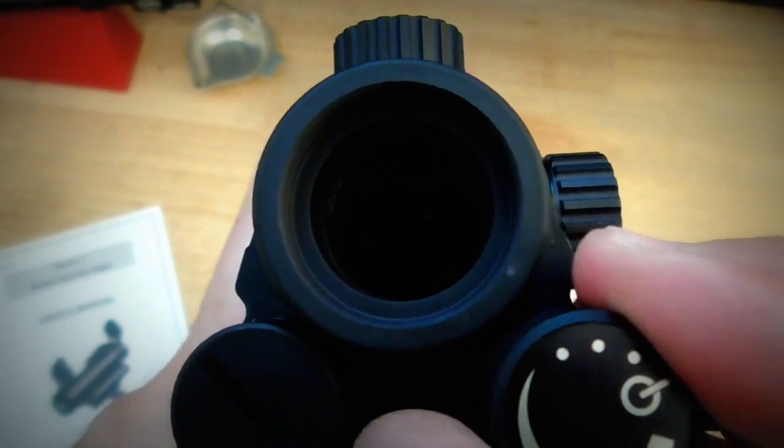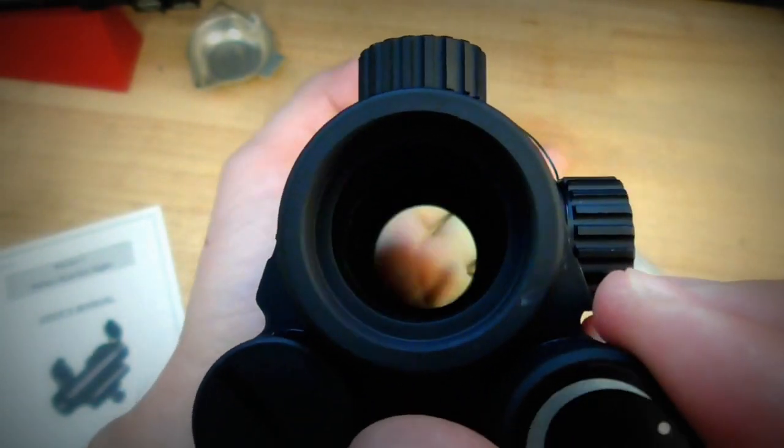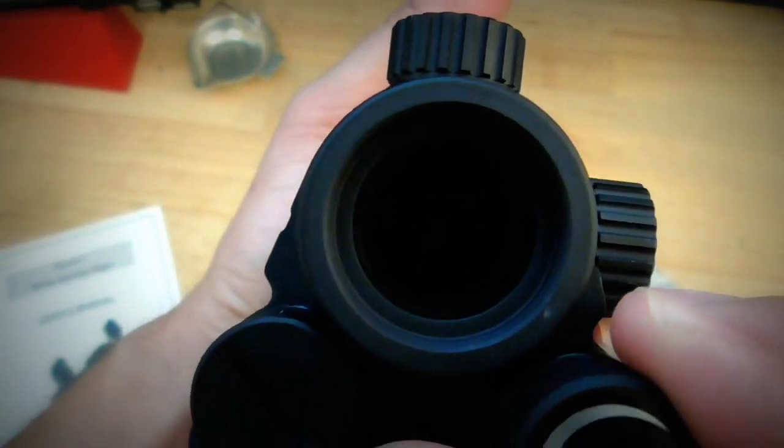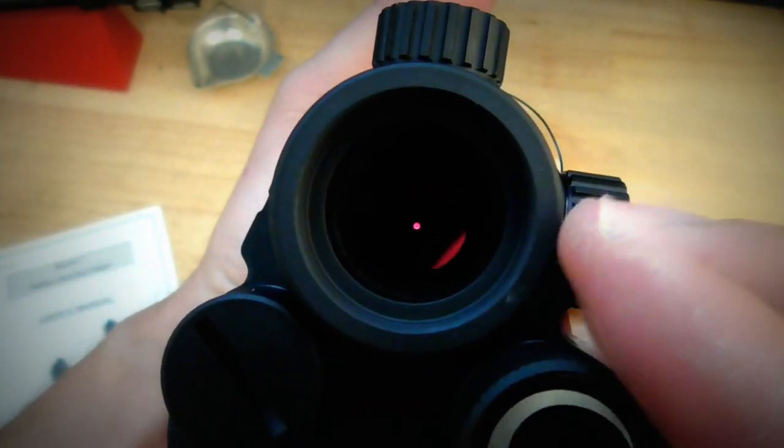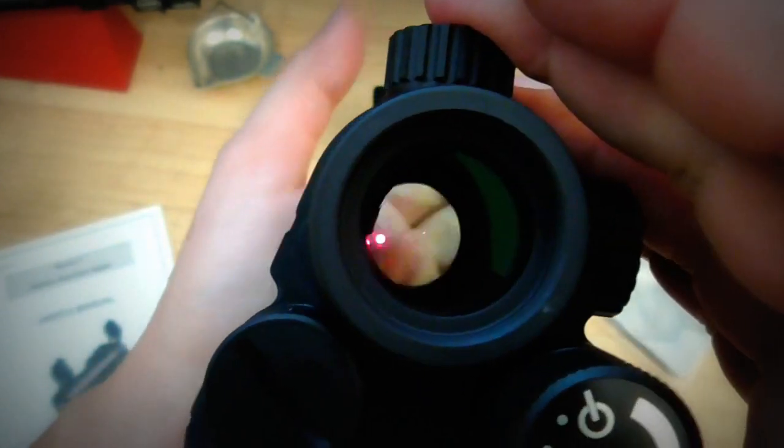We have some night vision settings as well where we can't actually see anything. It's going through four clicks before we start to see the red dot. And then we have our daylight settings. That's six clicks past the night vision.